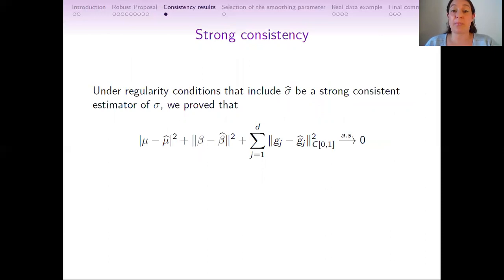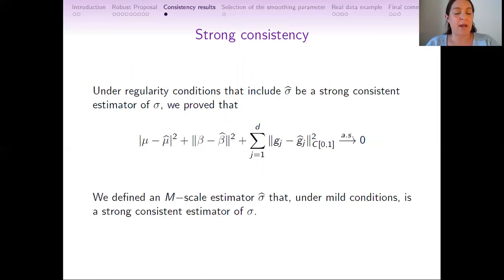With respect to the asymptotic properties and the regularity conditions that include σ-hat to be a strong consistent estimator of σ, we proved that the differences between the truth and the estimators tend to zero almost surely. Besides, we defined an M scale estimator σ-hat that under normal conditions is a strong consistent estimator of σ satisfying the previous assumption.